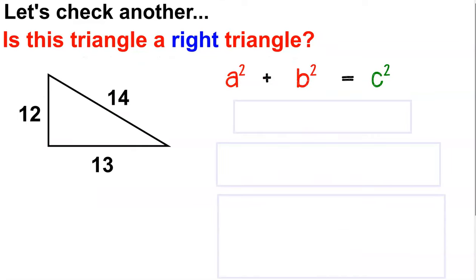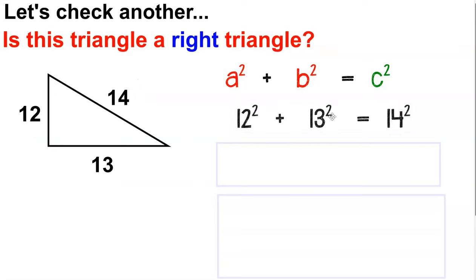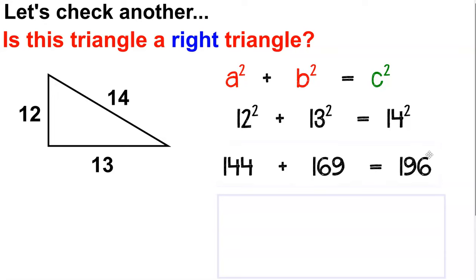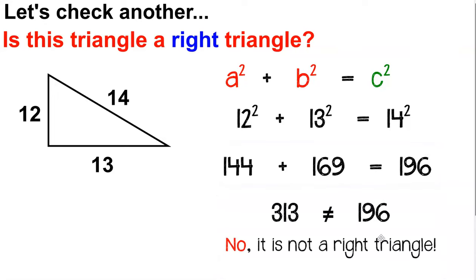Let's try another one. Label the three sides — two legs and a hypotenuse — and substitute them into the formula. Compute the squares using a calculator if you need to, and then check to see if they're equal. If they're not equal, then this is not a right triangle.